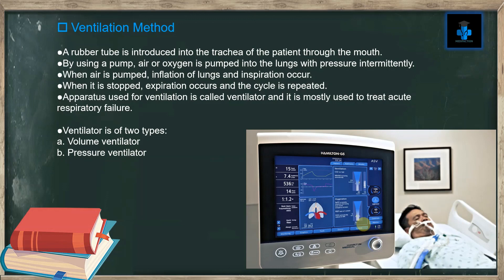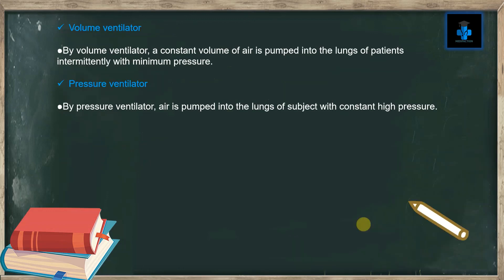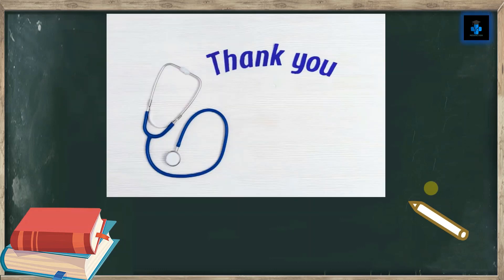The apparatus used for ventilation is called a ventilator, and it is mostly used to treat acute respiratory failure. A ventilator is of two types: number one, the volume ventilator — by which a constant volume of air is pumped into the lungs intermittently with minimum pressure; and number two, the pressure ventilator — by which air is pumped into the lungs with constant high pressure. Hope you have understood the video. Like, subscribe, and press the bell button for more videos. Thank you for watching.